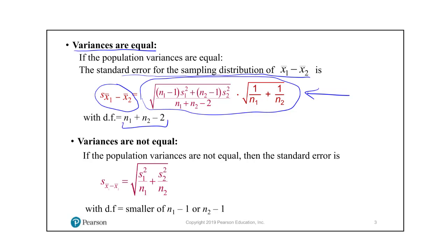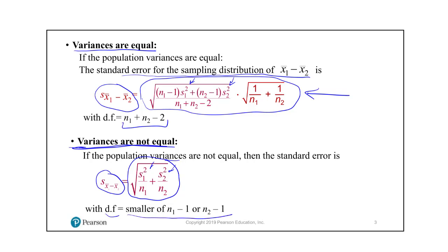If the variances are not equal, then the standard error of your sampling distribution is calculated differently. Notice both formulas depend on the individual standard deviations of the samples, proportioned according to the sizes of each sample. In the case where the variances are not equal, the degrees of freedom is the smaller of n1 minus 1 or n2 minus 1 — whichever sample size is smaller, the degrees of freedom will be that sample size minus 1.